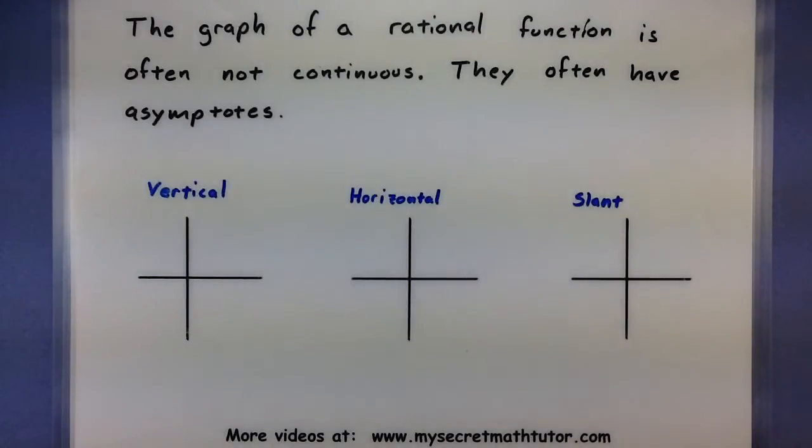In the graph of a rational function, they are often not continuous. There's usually some sort of gap or maybe even some sort of asymptote. The asymptotes are usually a pretty key feature, but not all rational functions actually have these asymptotes. We'll cover some types of asymptotes and really just what to look for.